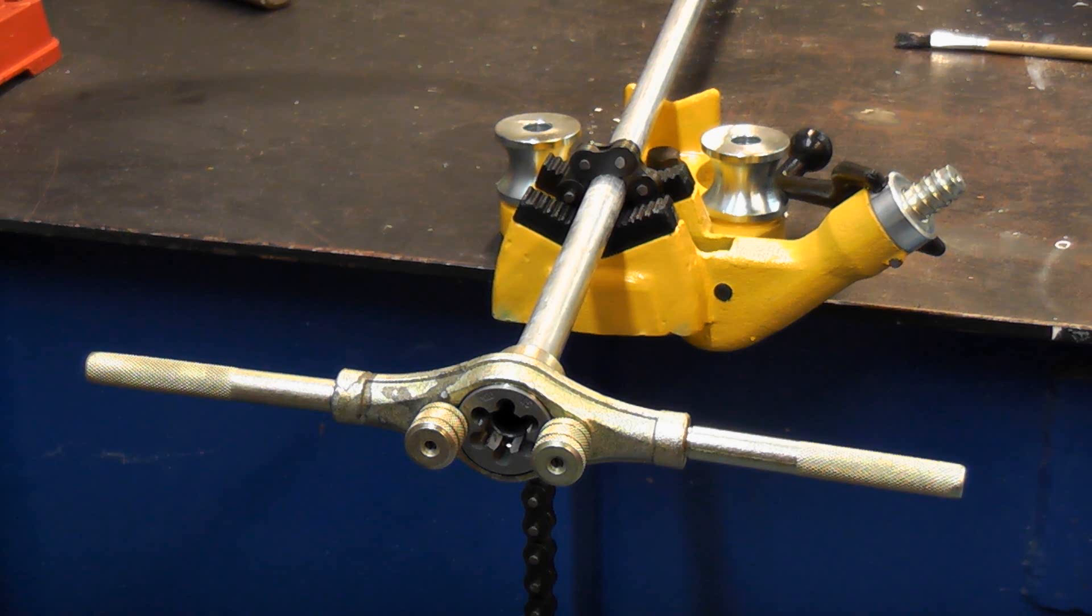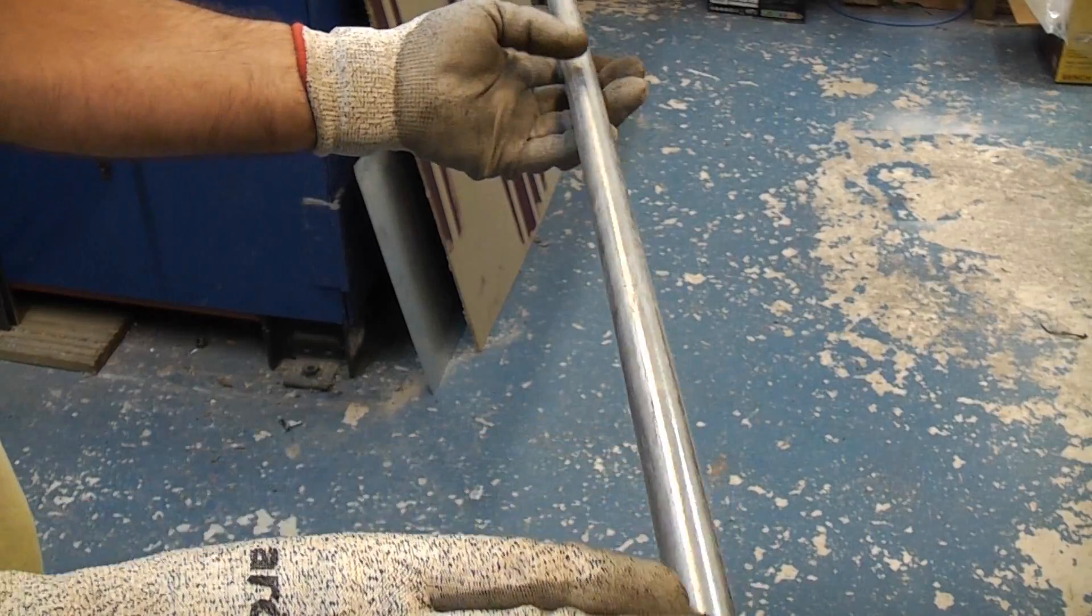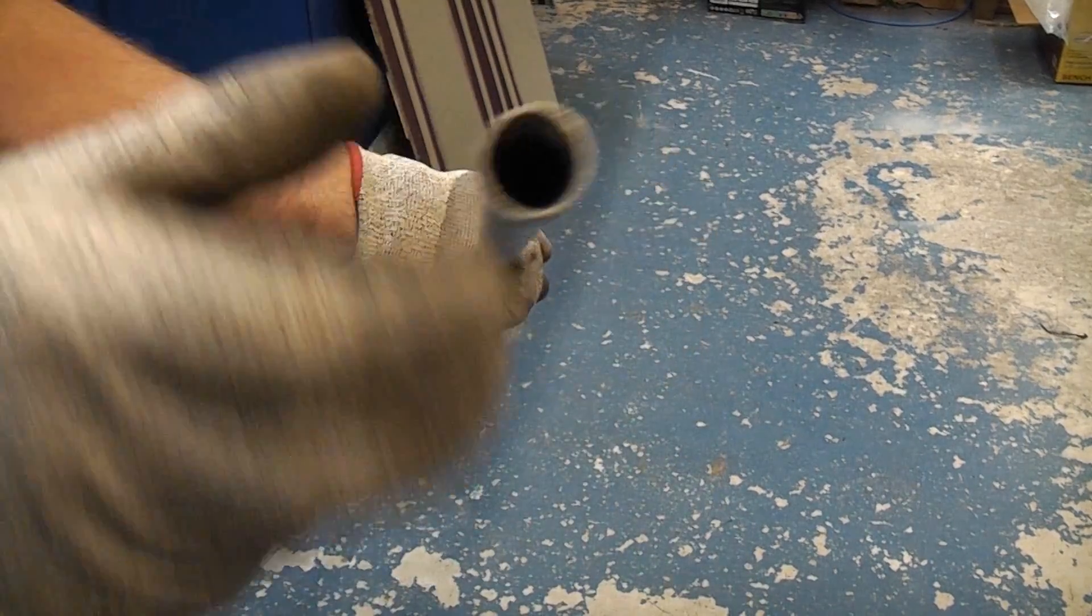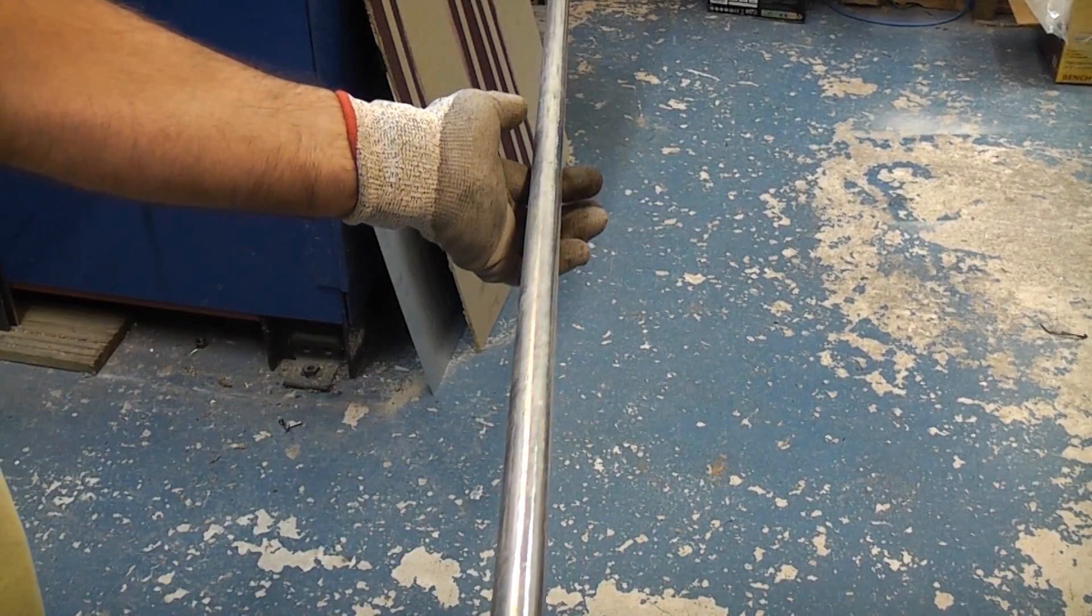In this video we're going to cut and thread some steel conduit. This is galvanized to prevent it from rusting. Normally when you buy it, it comes in three meter lengths.